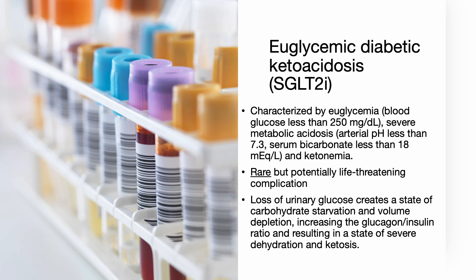Euglycemic diabetic ketoacidosis is characterized by euglycemia — a blood glucose level of less than 250 — along with severe metabolic acidosis with arterial pH less than 7.3 or serum bicarbonate less than 18, as well as ketonemia. It is a rare but potentially life-threatening complication associated with SGLT2 inhibitors. The mechanism involves enhanced urinary glucose excretion, creating a state of carbohydrate starvation and volume depletion, increasing the glucagon-to-insulin ratio and resulting in severe dehydration and ketosis.